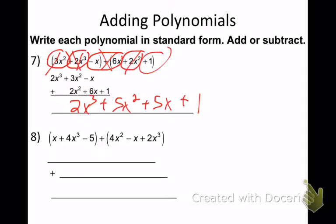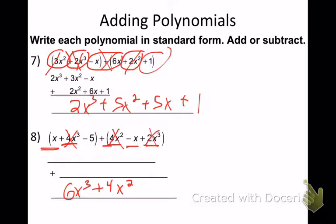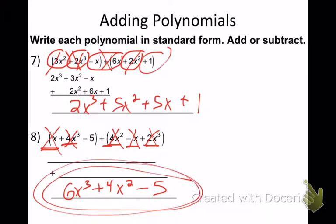Number eight — combining like terms. 4x-cubed plus 2x-cubed gives me 6x-cubed. There's nothing with x-squared alone, so plus 4x-squared. Then plus x minus x — those cancel to zero. Then minus 5. So the answer is 6x-cubed plus 4x-squared minus 5, which is a cubic trinomial.